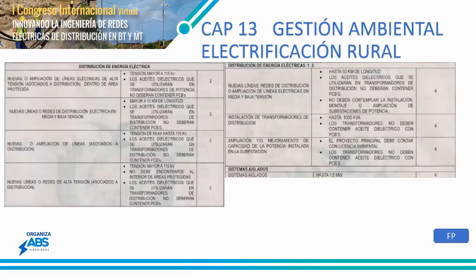Aquí pongo algunos ejemplos de categorización para proyectos de electrificación rural. Para nuevas líneas de distribución eléctrica en media y baja tensión con proyectos mayores a 10 kilómetros, la categoría es 3. Para ampliaciones de líneas eléctricas en media y baja tensión de hasta 50 kilómetros, se podría considerar categoría 4.